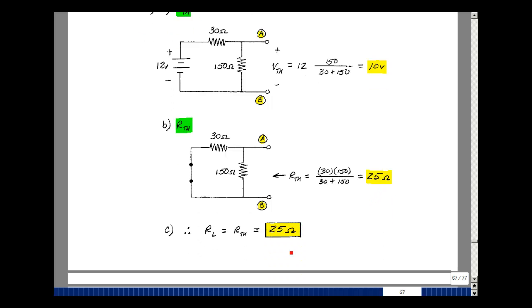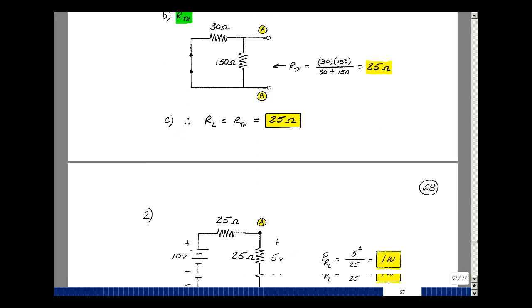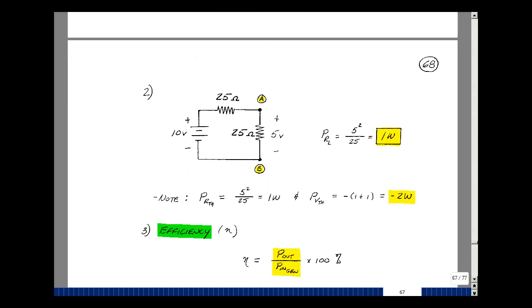Now if I pick R-sub-el to equal R-thevenin, then I get the most power to R-sub-el. So with 25 ohms here, I'll have a voltage divider of a half. The voltage I have across here then is 5 volts, and the power then would be 5 squared divided by 25, and that turns out to be 1 watt.